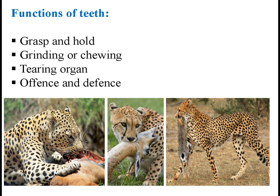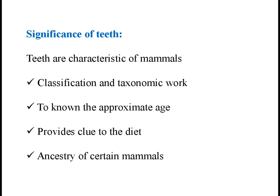Teeth play an important role in everyday life of an animal. The primary function of teeth is to grasp and hold the prey or food in the mouth cavity. They are modified to serve as a grinding mill for achieving food. They are used as tearing organs and may also serve as weapons for offense and defense. Teeth are characteristic features of class Mammalia and their classification is based on dentition. The study of dentition is important for taxonomic work on mammals. The number of teeth present gives an idea of the approximate age of the animal and also provides a clue to the diet of the mammal. Study of dentition has helped in deciding the ancestry of certain mammals.